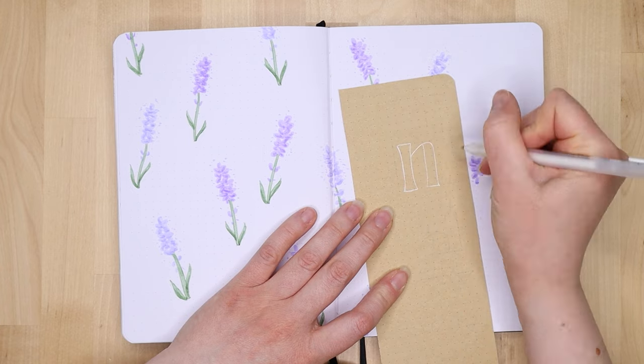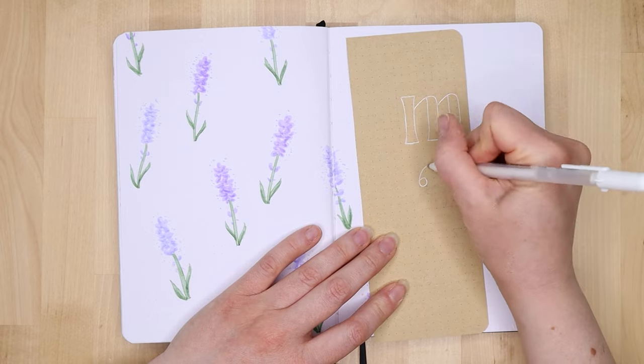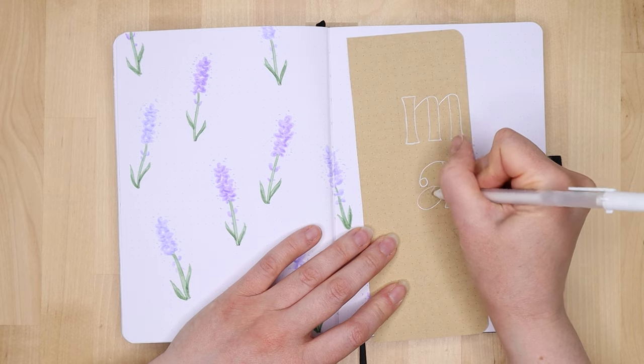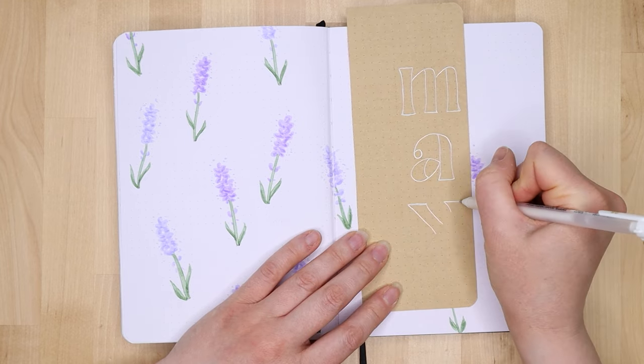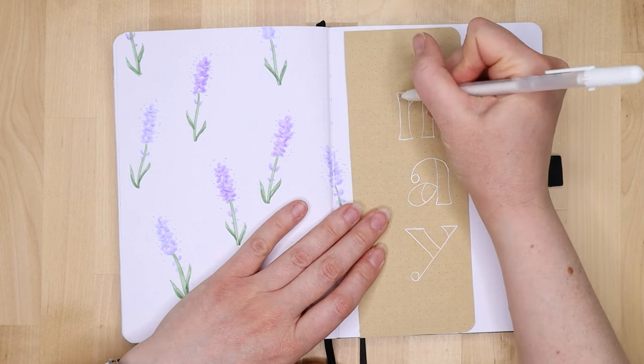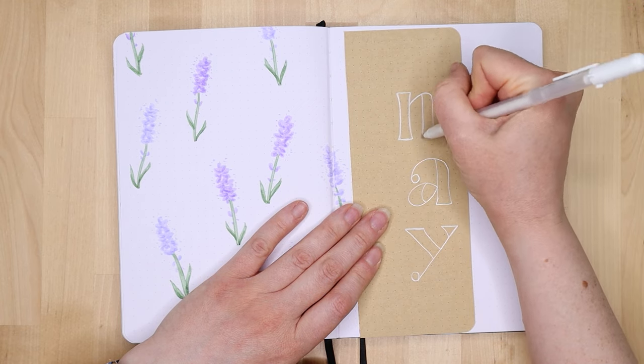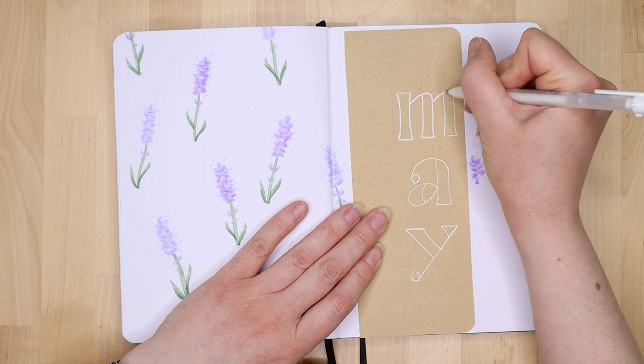For the title of the spread, writing out May, I'm super happy this month to be bringing back the craft paper. I do love using the craft paper and I worry that I may do it a bit too much and I didn't do it last month so it's coming back out for May. I usually will just write my months out horizontally. This is a little different for me trying something different and I'm doing a vertical May.